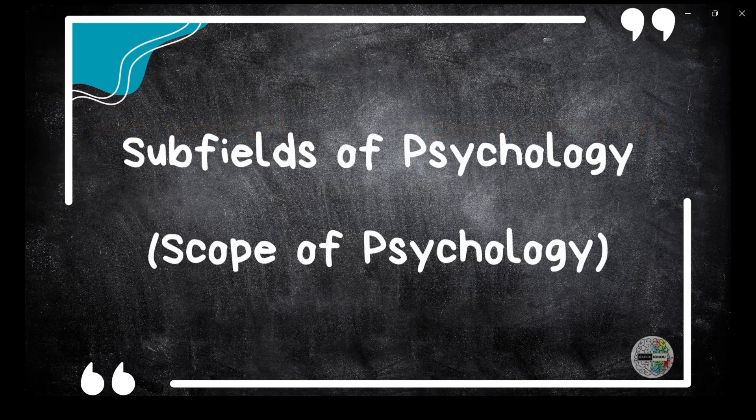Moving on to sub-fields of psychology, which is also called the scope of psychology. In total, we have 23 fields mentioned. However, in this part we will only cover 7. The remaining 16 will be discussed in Part 2 of this chapter.